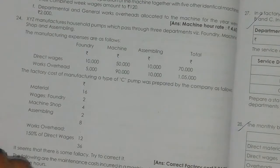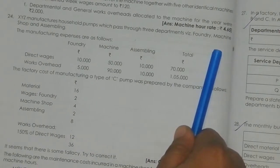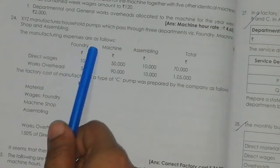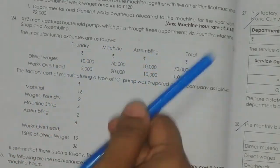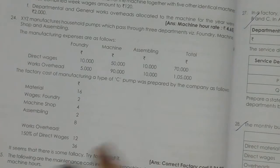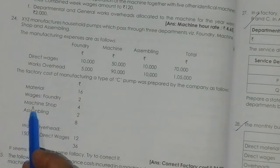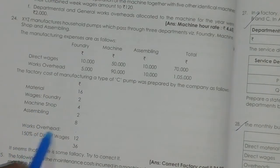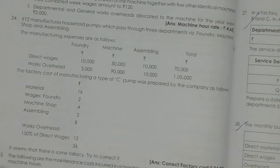XYZ manufactures household pumps which pass through 3 departments: Foundry, Machine Shop, and Assembling. The manufacturing expenses are as follows — direct wages and work overhead across 3 departments. The factory cost of manufacturing a type C pump was prepared by the company. Work overhead is 150% of direct wages. It seems that there is some fallacy — try to correct it.